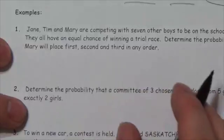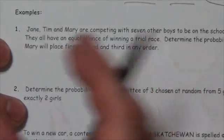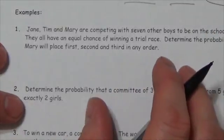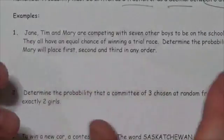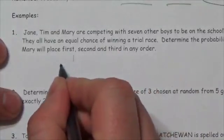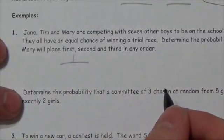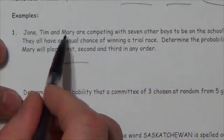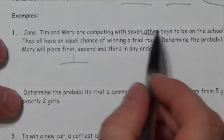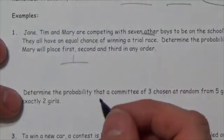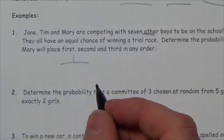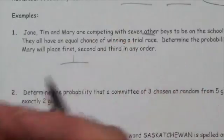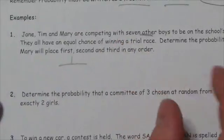So we're talking about the probability that Jane, Tim, and Mary finish here first, second, and third in that order. So Jane was first, Tim is second, Mary is third. Now, there's only one way that that could possibly happen. Now, the question is, out of how many ways could this race have completed? Jane, Tim, and Mary are competing with seven other boys. That means there's 10 people total. So we're looking at a group of 10 people. They're running this race. How many ways could three people win first, second, and third? Well, is that a permutation or a combination?